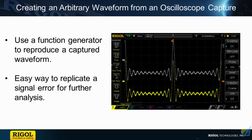When combined with one of our waveform generators, our oscilloscopes can easily capture a waveform and then with the waveform generator recreate the signal. This allows for testing a potentially problematic signal in the lab instead of in the field, helping test and debug the signal.